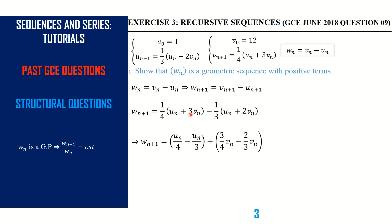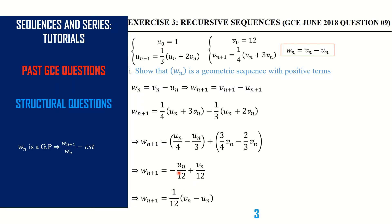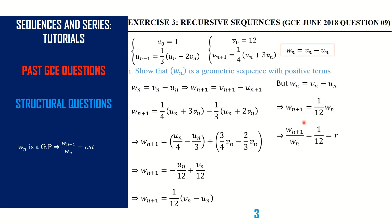We subtract, then move to (3/4)v(n) and subtract (2/3)v(n). Simplifying, the first gives us −u(n)/12 and the second gives us v(n)/12. We factor out 1/12 to get (1/12)(−u(n) + v(n)), which is the same as (1/12)(v(n) − u(n)). Since w(n) = v(n) − u(n), we replace to get w(n+1) = (1/12)w(n). Therefore w(n+1)/w(n) = 1/12, which is the common ratio. We have shown that w(n) is geometric.